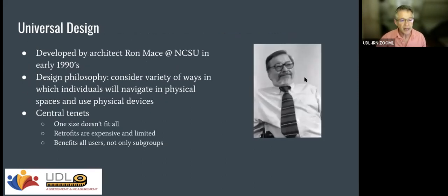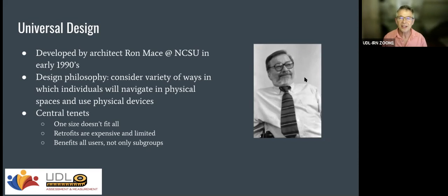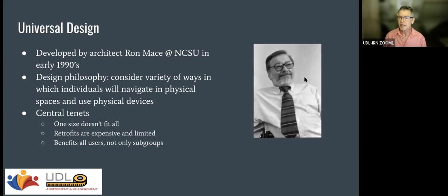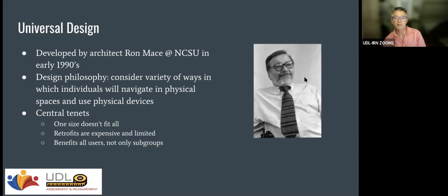I'm going to start by talking about universal design. Universal design is a concept that started in the early 1990s from Ron Mase at North Carolina State University — an architect and professor, himself a wheelchair user. His philosophy was that we don't consider how somebody in a wheelchair can get into a building until after the building is built, and we come up with retrofits that are too steep, too narrow, too twisty, too ugly, too expensive.